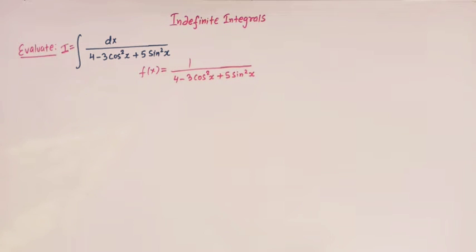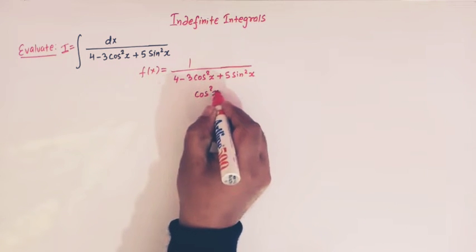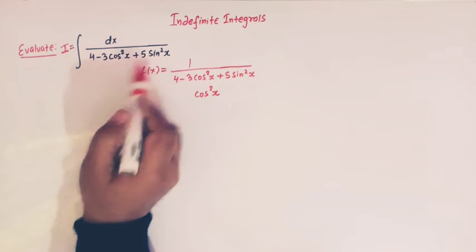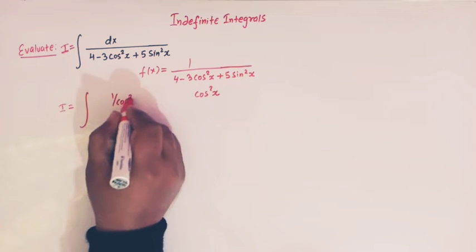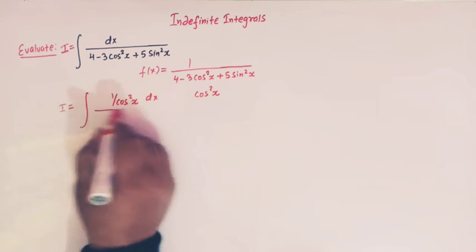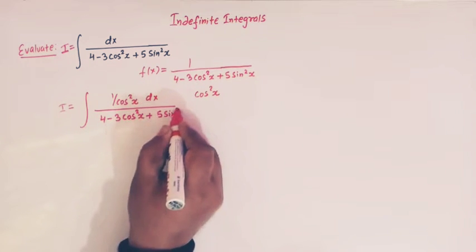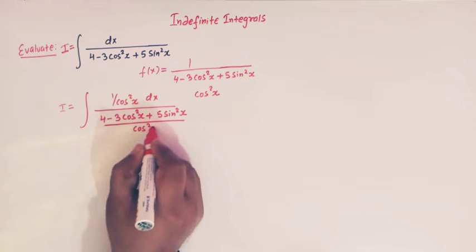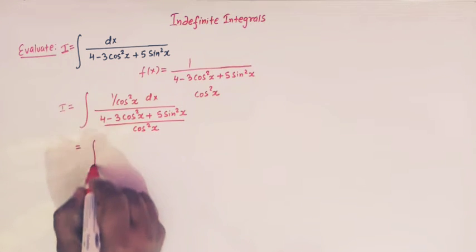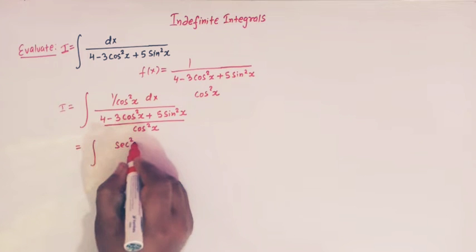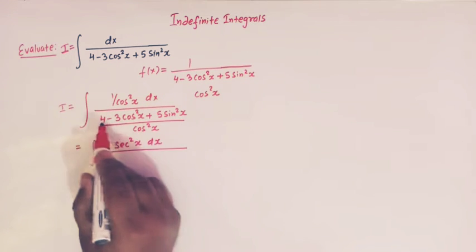In such cases, what we do is divide the numerator and the denominator by cos squared x. So this integral I can be written as 1 over cos squared x times dx, divided by (4 minus 3 cos squared x plus 5 sin squared x) over cos squared x. Now 1 over cos squared x can be written as sec squared x dx, and we distribute the cos squared x among those three terms.